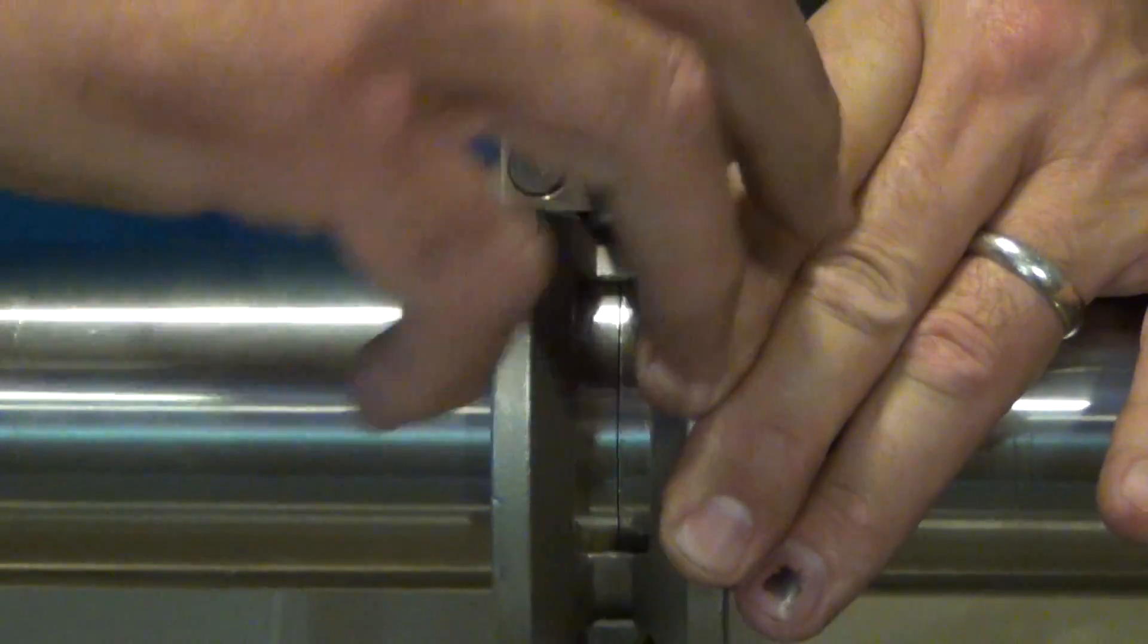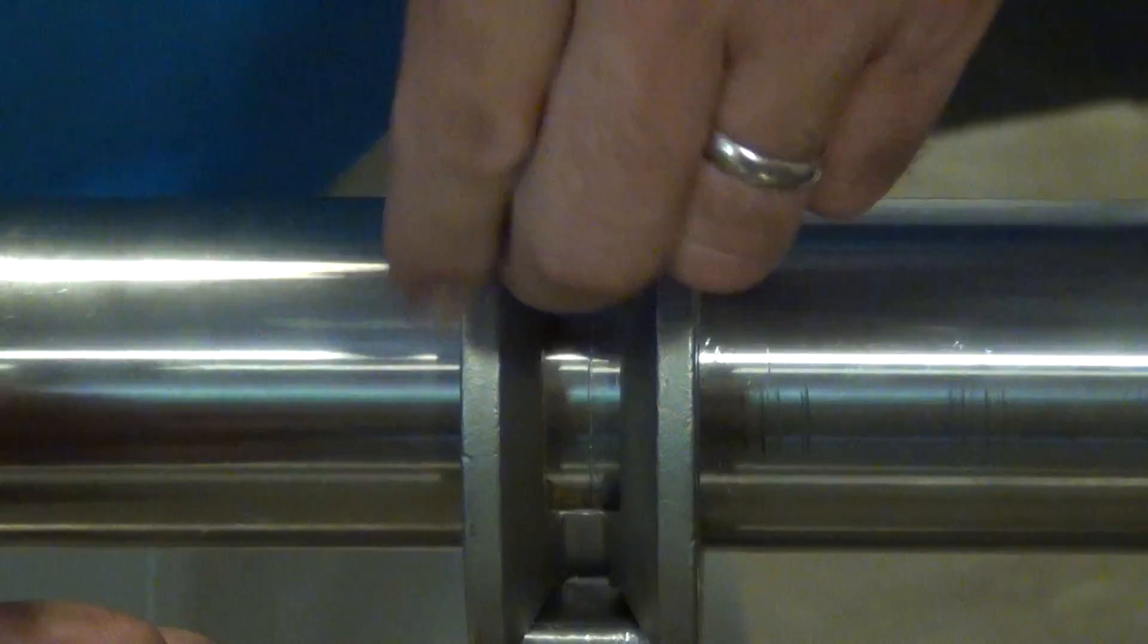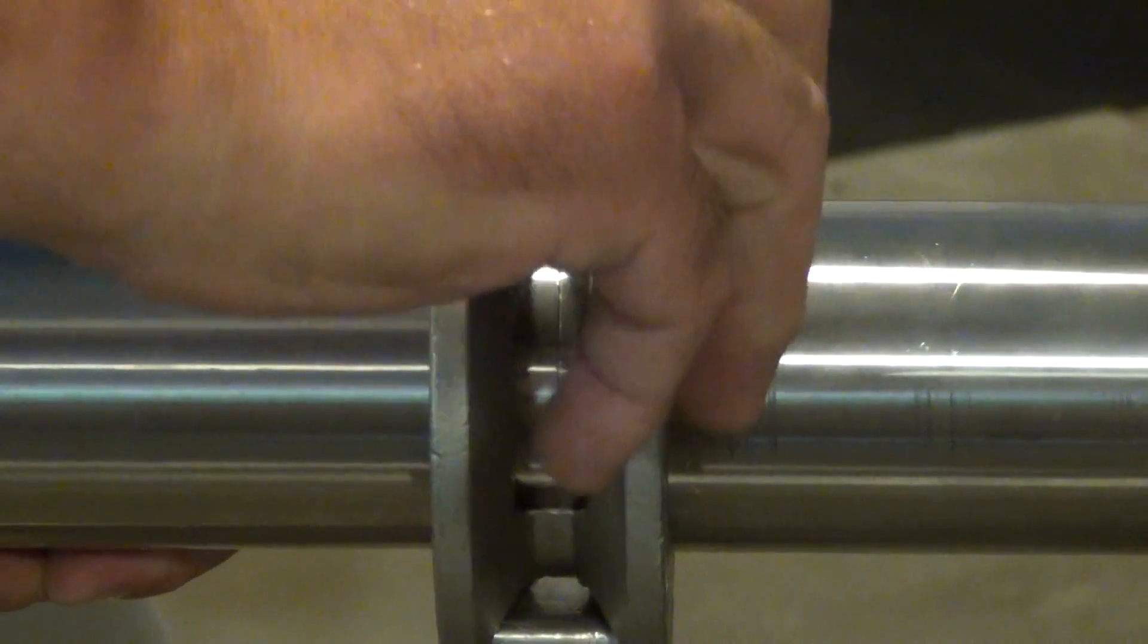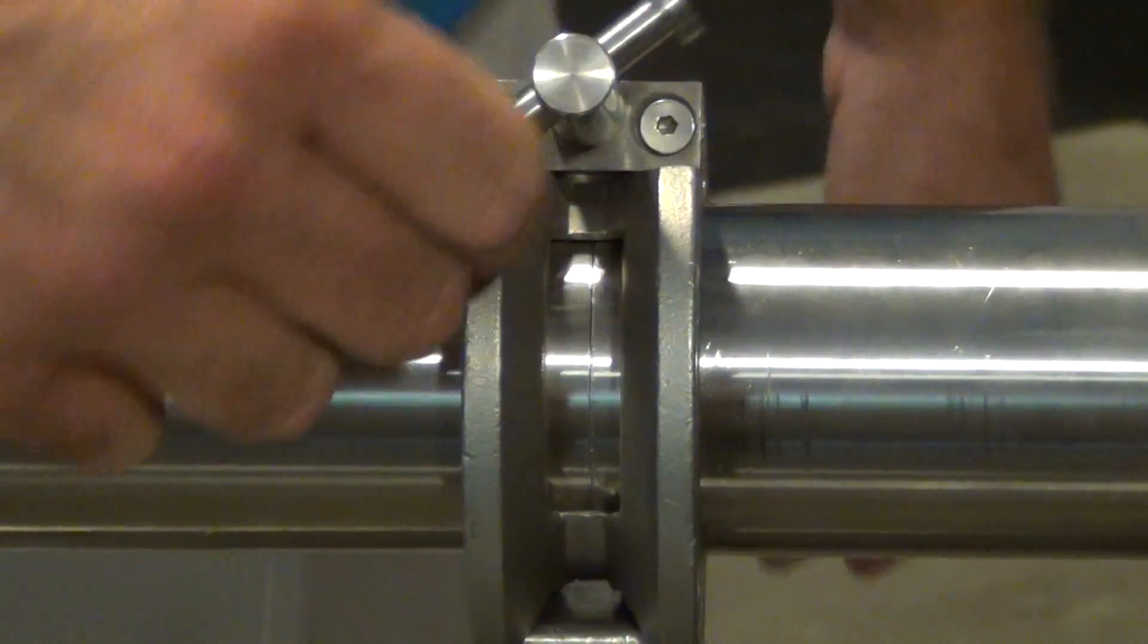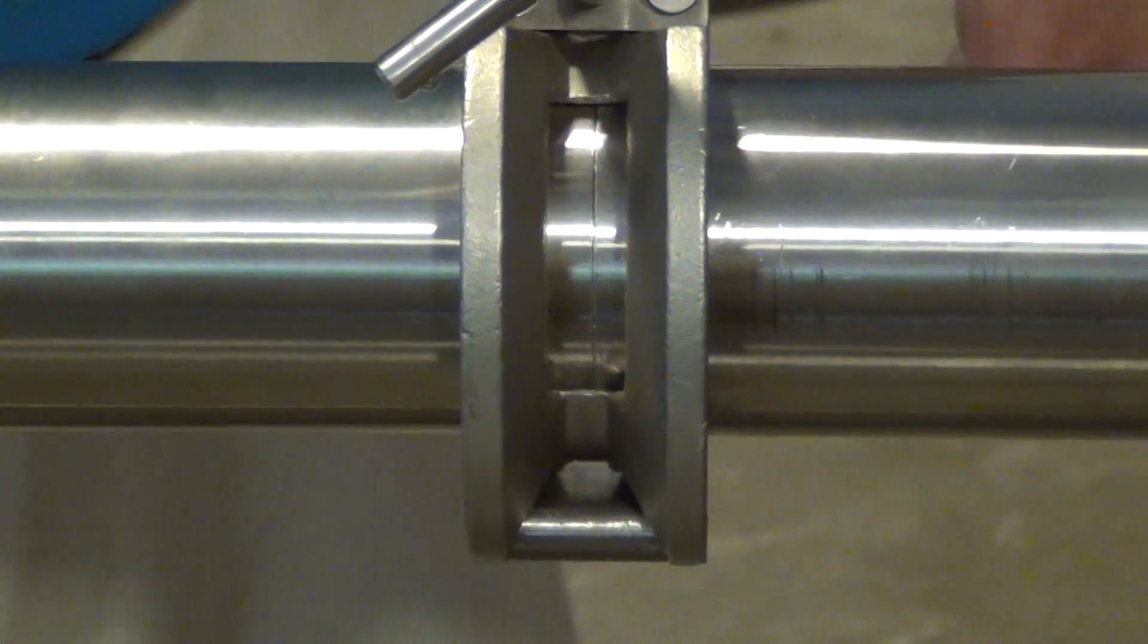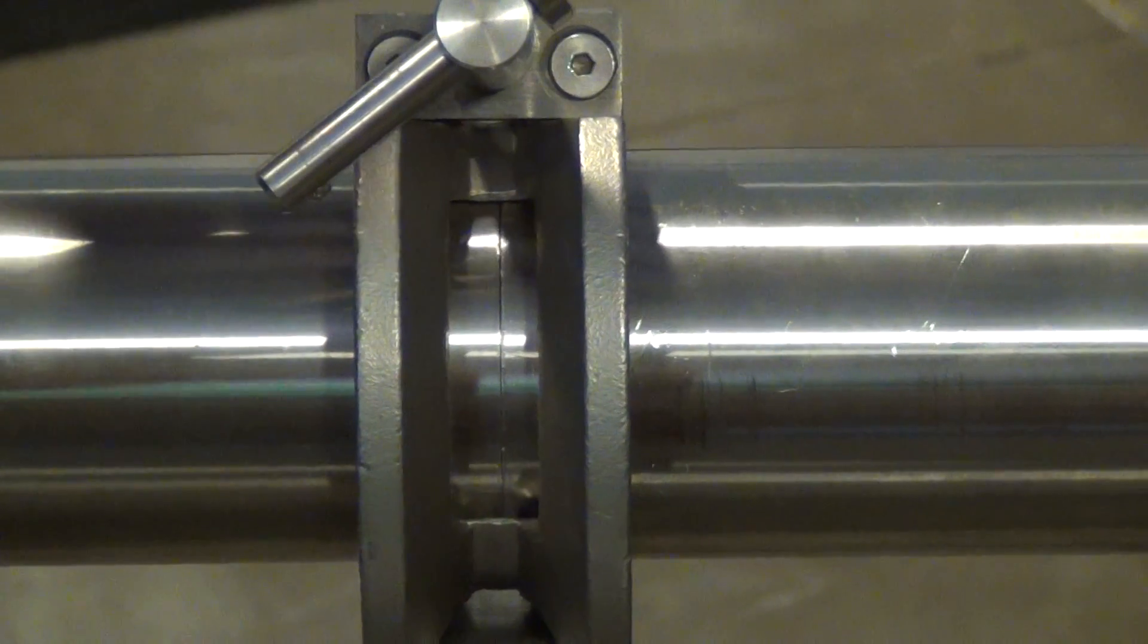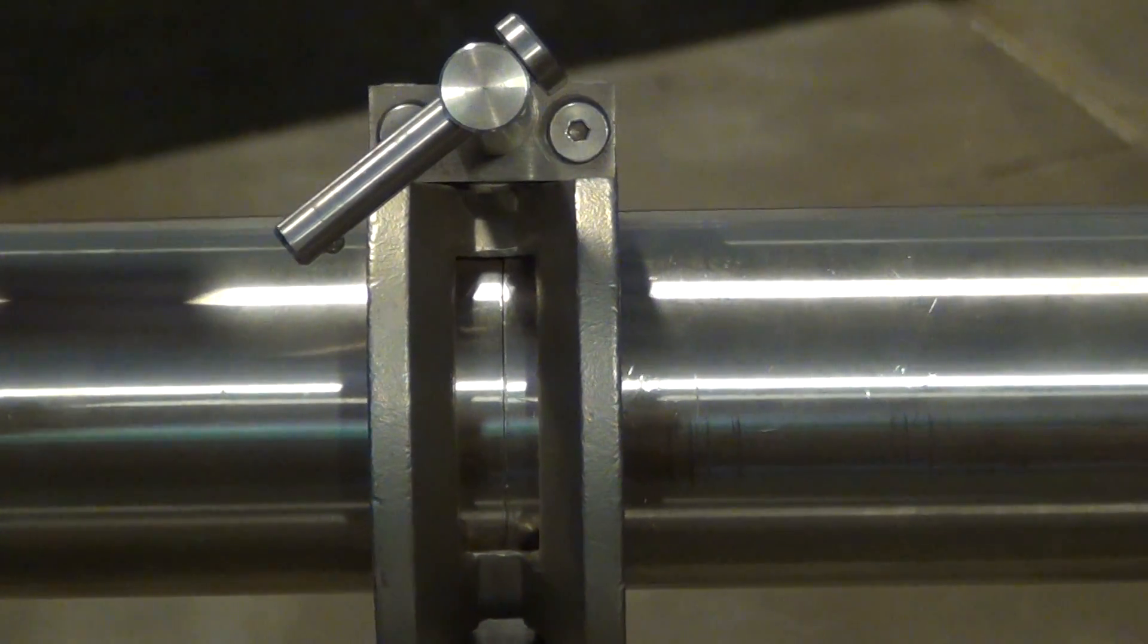Alright, I'm going to tighten up this wing nut. What you're going to see once you're tight is you're not going to see much of anything because what this clamp does is it actually pulls the pieces together. It kind of rounds them if they're a little bit out of round.